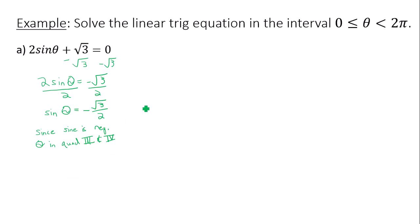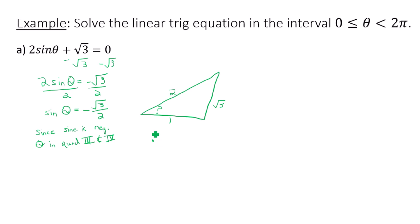Now I'm going to draw my triangle. I'm not going to put my angle theta here — this is going to be my reference angle, my gamma, or as I like to put it, a question mark. Sine of this angle is square root of 3 over 2: opposite is square root of 3, hypotenuse is 2, meaning my other side has to be 1. The angle always across from square root of 3 is 60 degrees, that's pi over 3. That's my reference angle, and I have to move this angle to quadrant 3 and to quadrant 4.